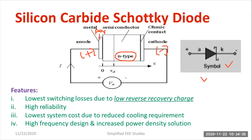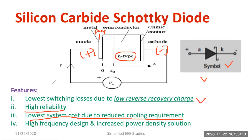When it comes to salient features, first and foremost, it has the lowest switching losses due to low reverse recovery charge and low reverse recovery time. That is a major advantage. It shows high reliability compared to normal type of power diodes. Furthermore, it has lower system cost due to reduced cooling requirement. Heatsink requirement is very less, so there is no need to spend extra for manufacturing or purchasing a heatsink. That is another added advantage for this SiC diode.